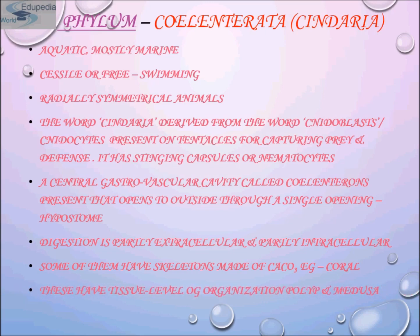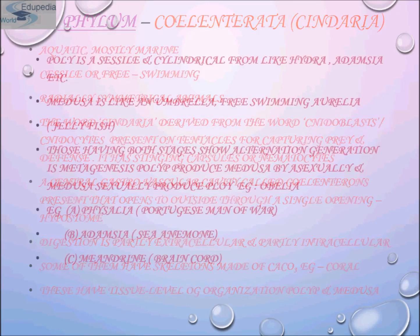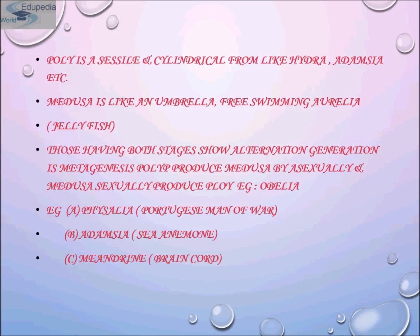Respiration and excretion both occur by diffusion through the body surface. Some of them have skeletons made up of CaCO₃ — for example, corals. The nervous system is primitive and formed of a network of nerve cells and fibers throughout the body. Reproduction is by both sexual and asexual means. Fertilized eggs may develop into a larva called planula.